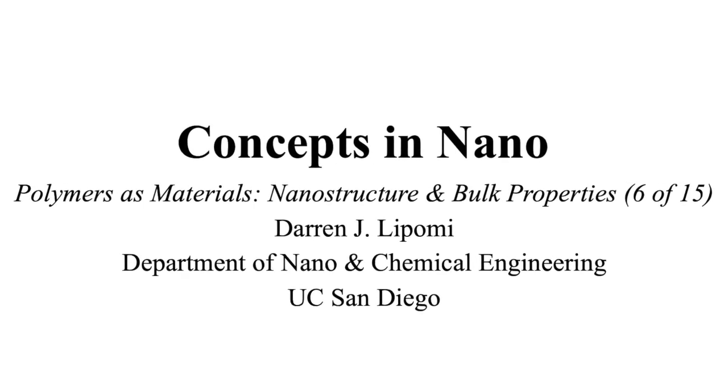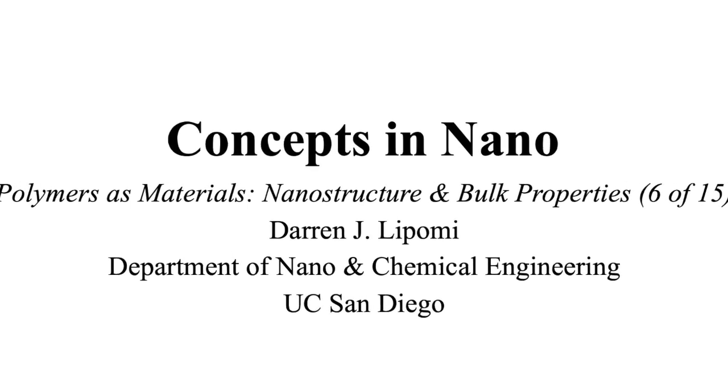There are two ways to consider polymers. One way, covered in the last chapter, is polymers as molecules — where we consider that polymers derive their properties from the molecular structure: the way that atoms bond to one another and the way that different polymerization strategies yield polymer samples with different molecular weights and thus different bulk properties.